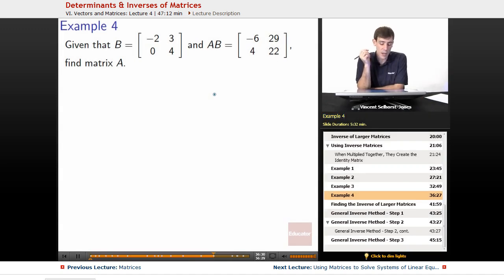Given that B equals [-2, 3; 0, 4] and AB equals [-6, 29; 4, 22], find matrix A.